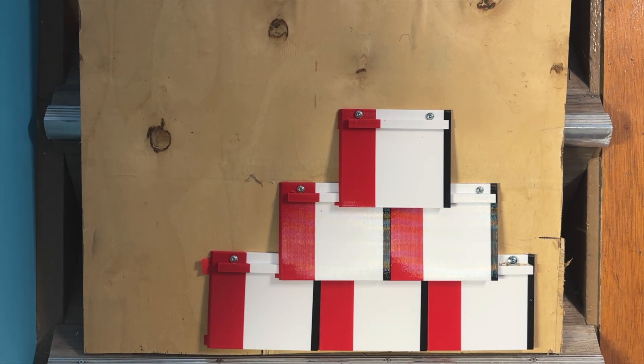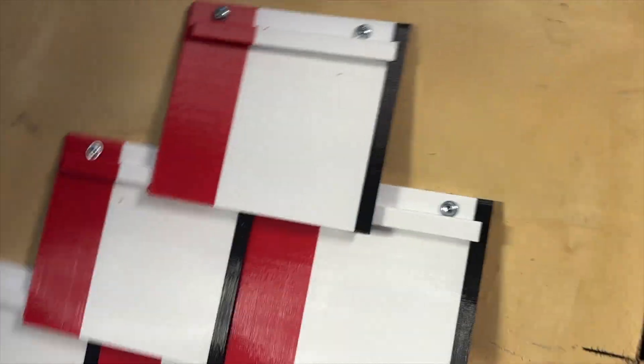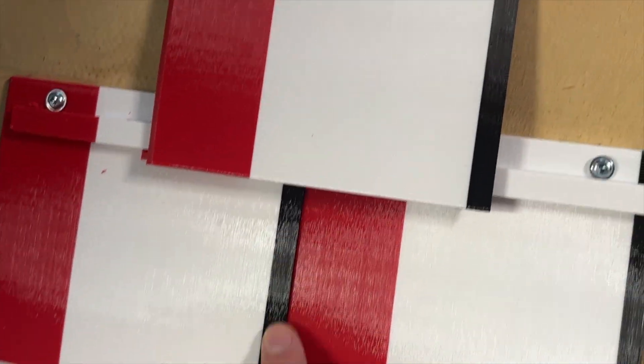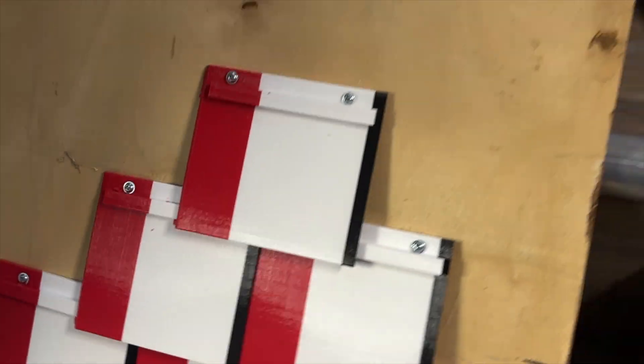So I hope you enjoy. The file is available on Printables. I will link it down below, and here's a close-up of what that drip edge looks like on the shingles once they are all put together.